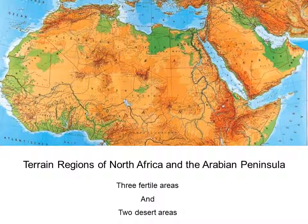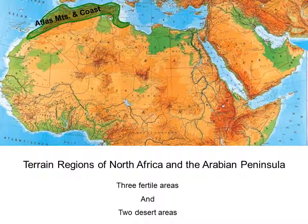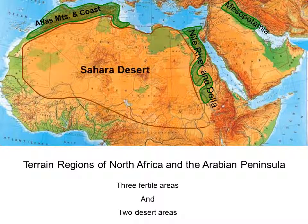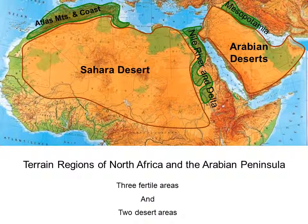Terrain regions of North Africa and the Arabian Peninsula include three fertile areas and two desert areas. The three fertile areas are the Atlas Mountains and the coastline, the Nile River and its delta, and Mesopotamia. The two desert areas are the Sahara Desert and the Arabian Deserts.